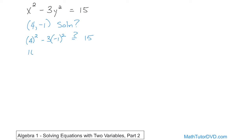Now, 4 times 4 is 16, and then we have minus 3. We're going to do everything correctly here. Now negative 1 times negative 1, negative 1 squared is positive 1. Is that equal to 15? So we have 16 minus 3. Is that equal to 15? That's going to be equal to 13, and that is not equal to 15. So no.